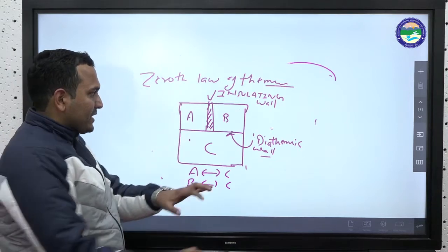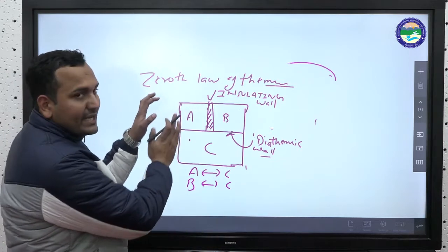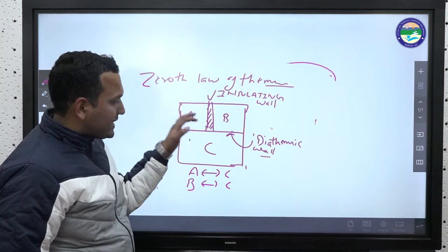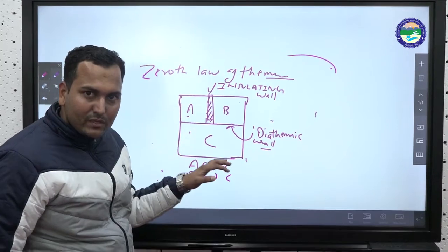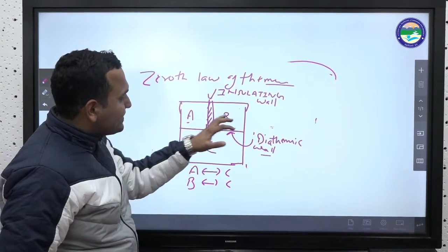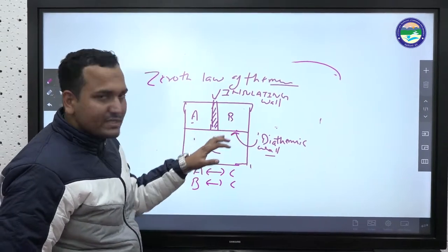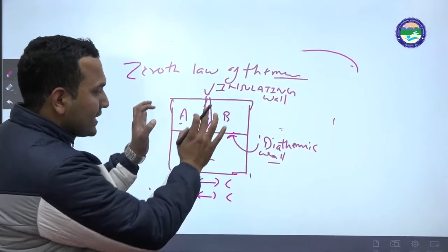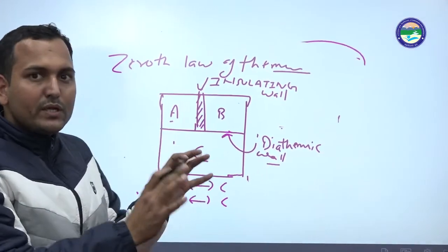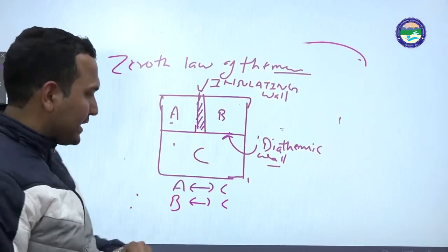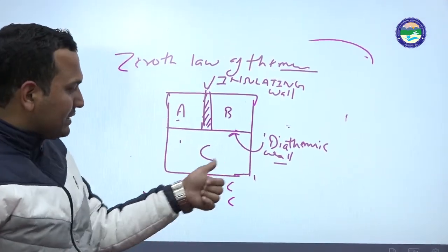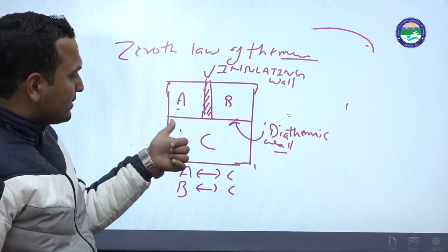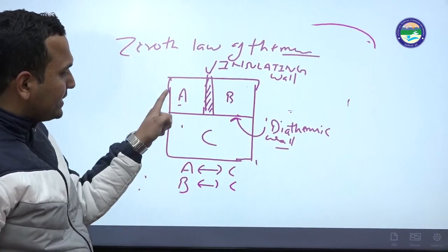Heat flows from the body with more heat to the one with less. When the heat levels become equal between A and C, that state is called thermal equilibrium.